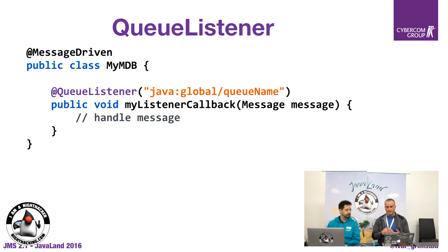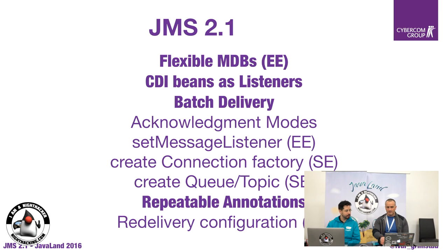We're also doing stuff to make it simpler in other ways. This is still a message-driven bean, but we also want to enable CDI beans as listeners. The other things we want to have include batch delivery and repeated annotations. The bolded ones are the ones we've started with and that I'll be talking about this afternoon. All of those things are planned for JMS 2.1, and these are the major changes — there's also a lot of minor stuff.